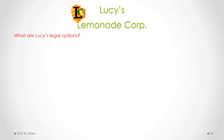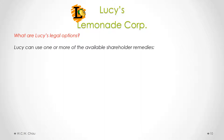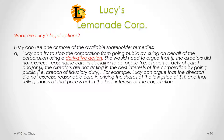What are Lucy's legal options? She can use one or more of the available shareholder remedies. The first remedy is the derivative action. Lucy can try to stop the corporation from going public by suing on behalf of the corporation using a derivative action. She would need to argue that, number one, the directors did not exercise reasonable care in deciding to go public — in other words, they breached their duty of care — and/or, number two, the directors are not acting in the best interest of the corporation by going public — in other words, the directors are breaching their fiduciary duty to the corporation. For example, Lucy can argue that the directors did not exercise reasonable care in pricing the shares at the low price of $10, and that selling the shares at that price is not in the best interest of the corporation.